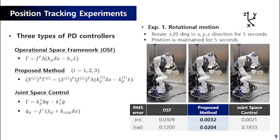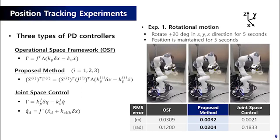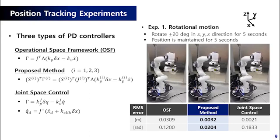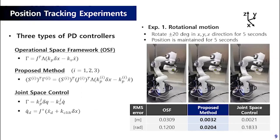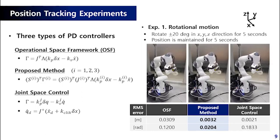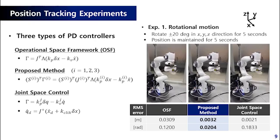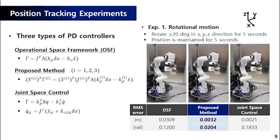The performance of the proposed method was verified by position tracking experiments. For comparison, three types of PD controllers were implemented. The first one is the operational space framework, or the OSF, which is a typical operational space controller. The second one is the proposed method with three steps. And the last one is the joint space controller based on closed loop inverse kinematics. It is experimentally known that the tracking performance of the OSF is lower than the joint space controller. The task was to control the end effector of Franka Emika Panda.